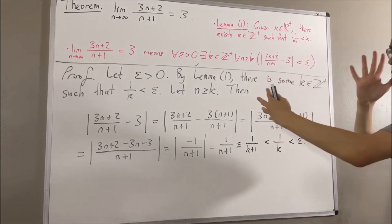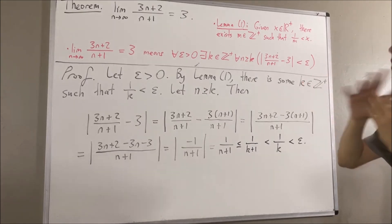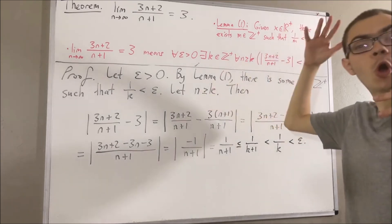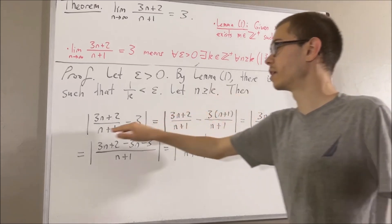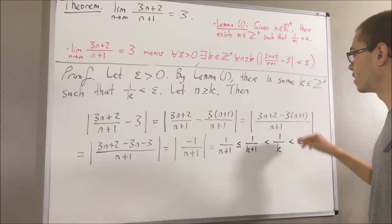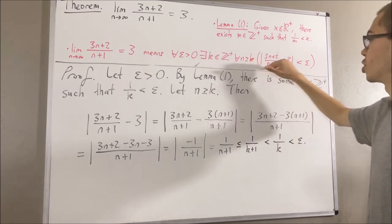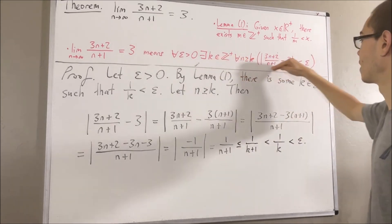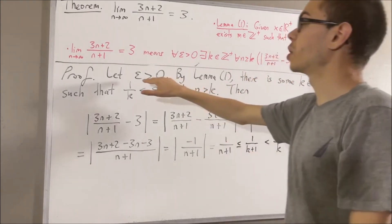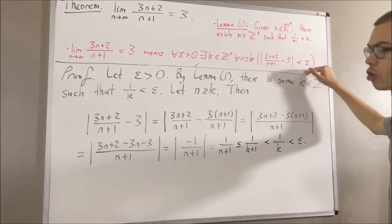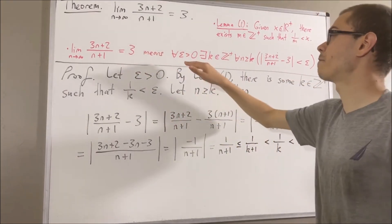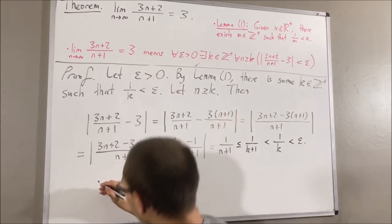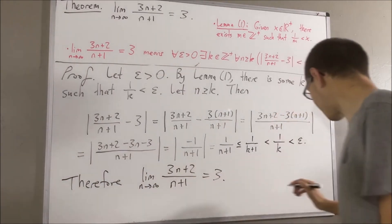Let's put this together to make sure we did what we wanted to. Under the assumption n is greater than or equal to k, it follows that this is less than epsilon. Since n was arbitrary, this means for all positive integers n greater than or equal to k, this is less than epsilon. So, taking k to be the k we have in our proof, there is at least one positive integer which makes this statement turn out true. Putting this all together, under the assumption epsilon is greater than 0, this is true. And since epsilon was arbitrary, for all epsilon greater than 0 this is true. We have proven this entire statement, which amounts to proving what we wanted to prove. This completes the proof.